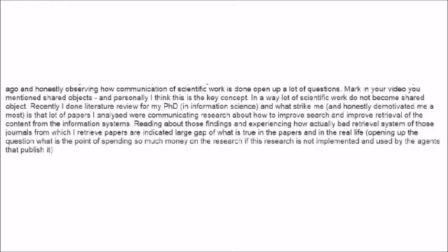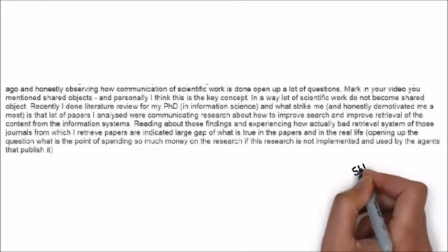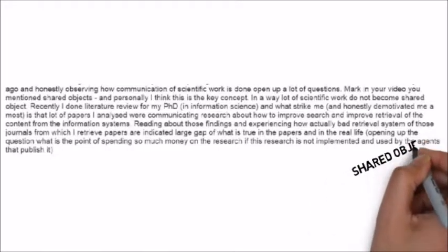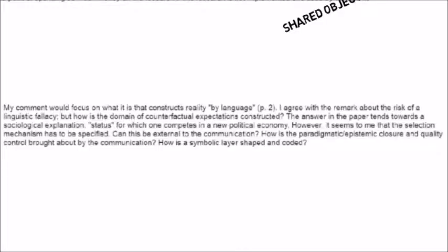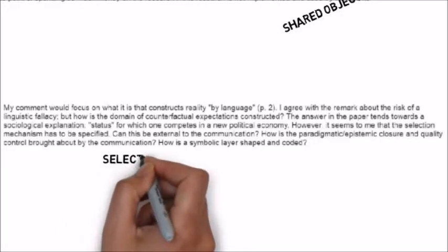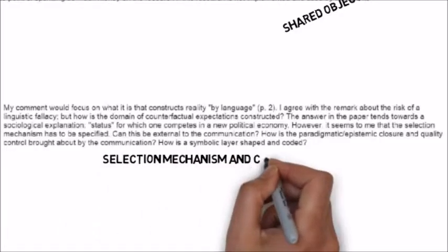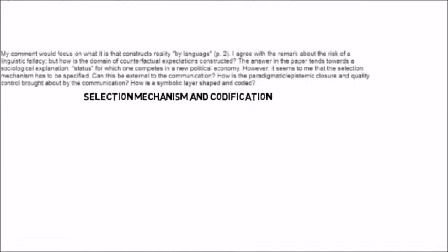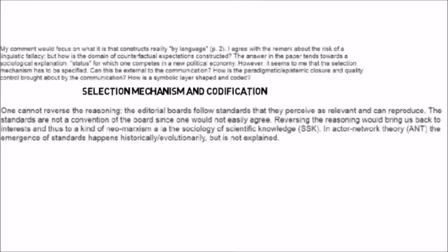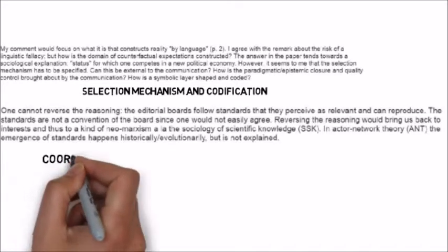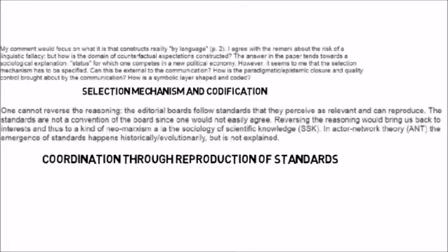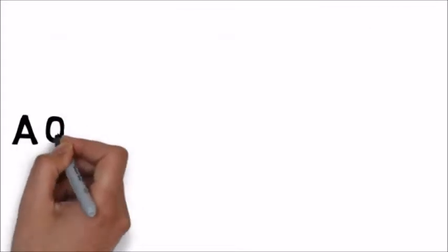I want to start with this discussion about shared objects and the related discussion about activity theory. Related to the issue of shared objects is this whole business of codification and the very deep question that Lote raises about how communications are selected, how scientific concepts are arrived at, and clearly related to that, what the function of editorial boards are in coordinating themselves around the creation of scientific concepts which are published in papers. I can understand the resistance to sociological explanations, but at the same time I think there are political, social, and psychological issues which can get overlooked in systems-theoretical theories of communication.